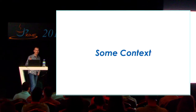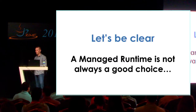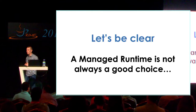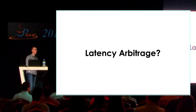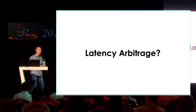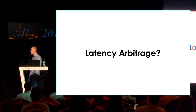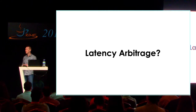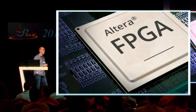When I'm talking about managed runtimes, I'm talking about Java — that's pretty obvious — but also C Sharp, JavaScript, and lots of other managed runtimes out there. Let's start off with some context. Up front, let's be clear that a managed runtime isn't always a good choice. The classic one in finance is latency arbitrage, where you're trying to be the absolute fastest in a market.